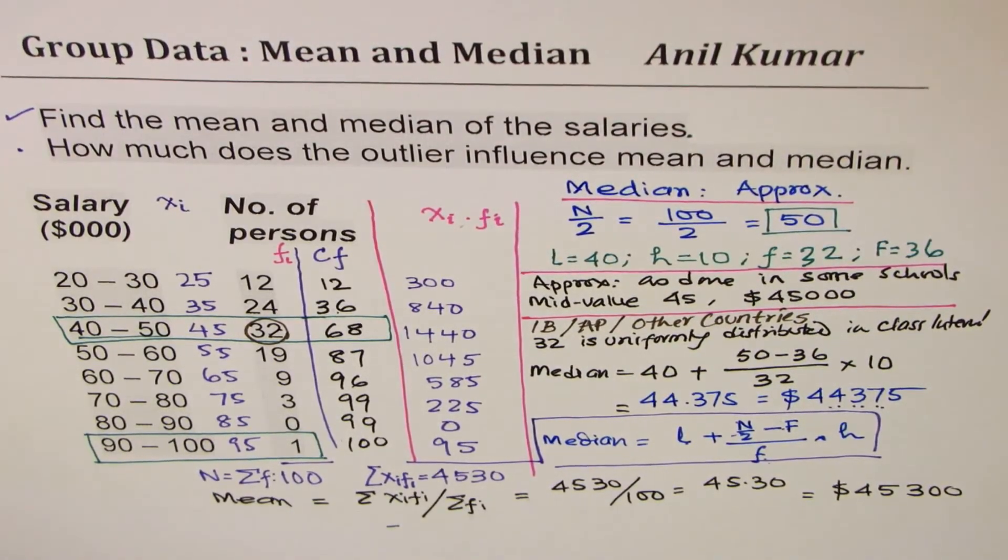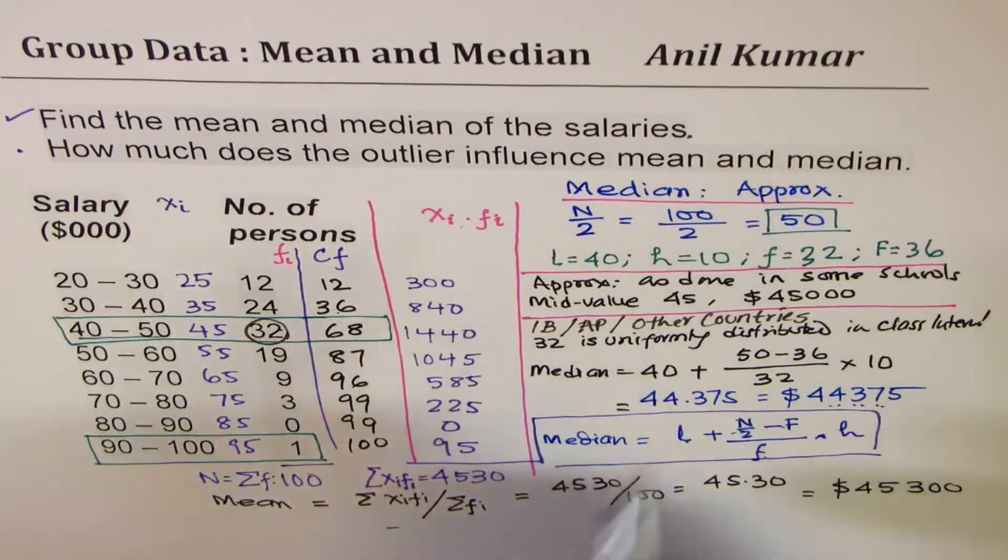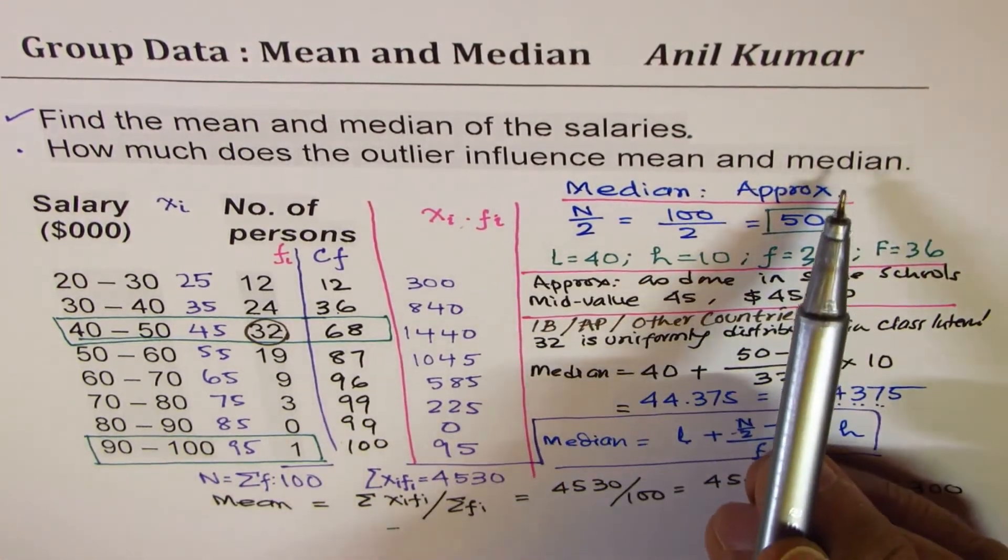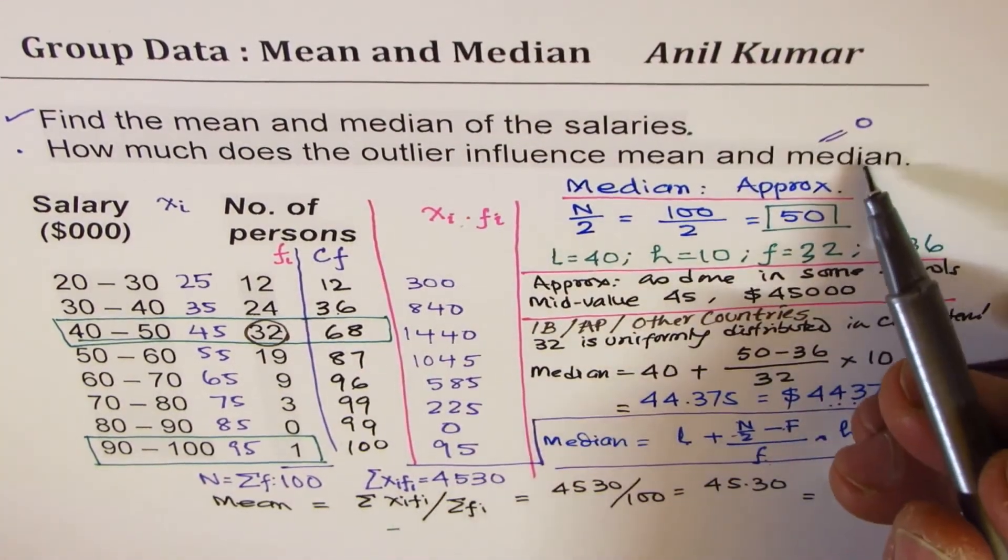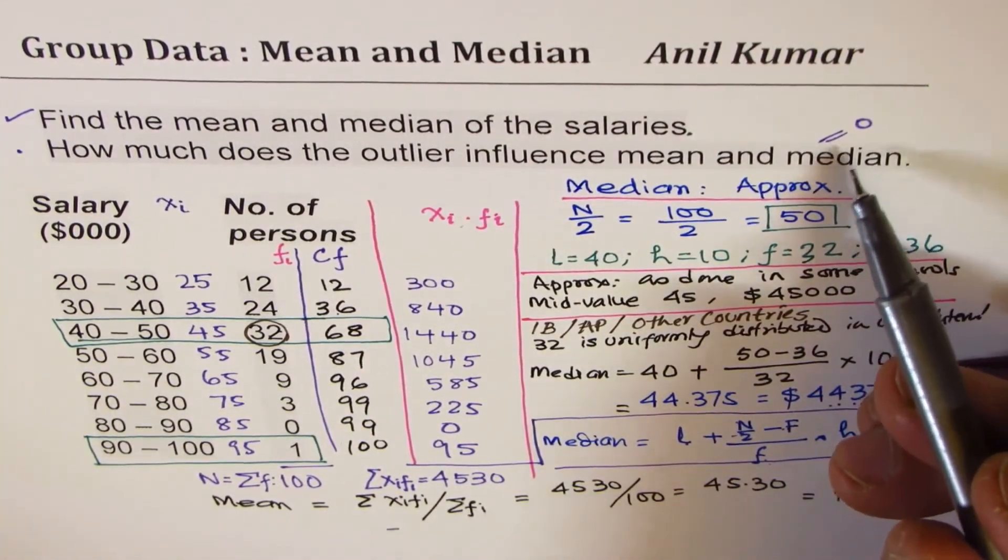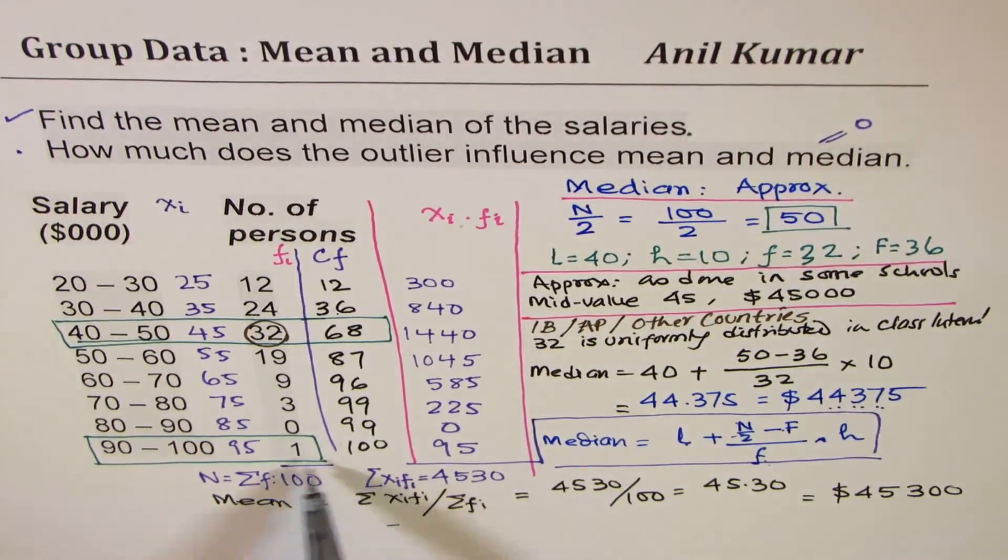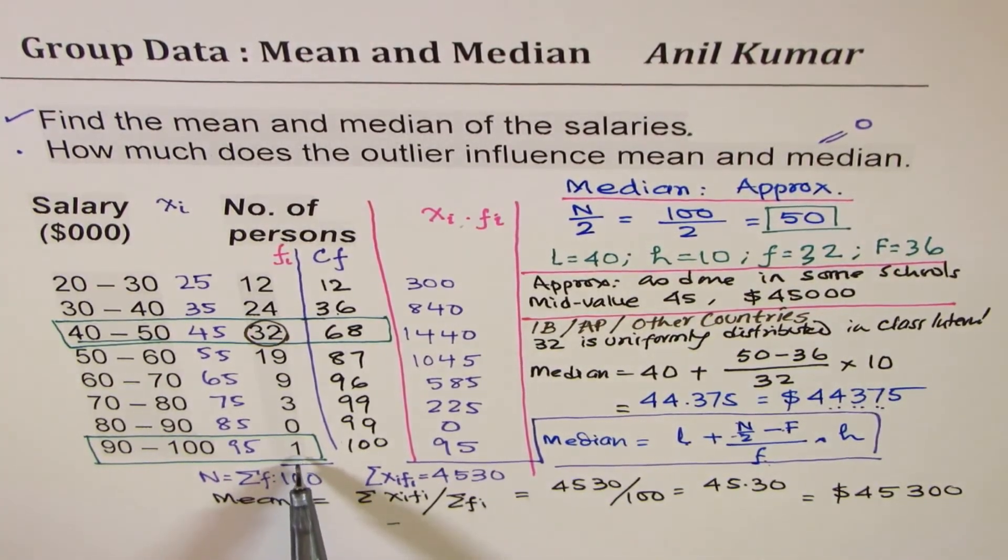Now one thing is important. For median, zero influence. This is the center value. It is not going to change with the outlier here.